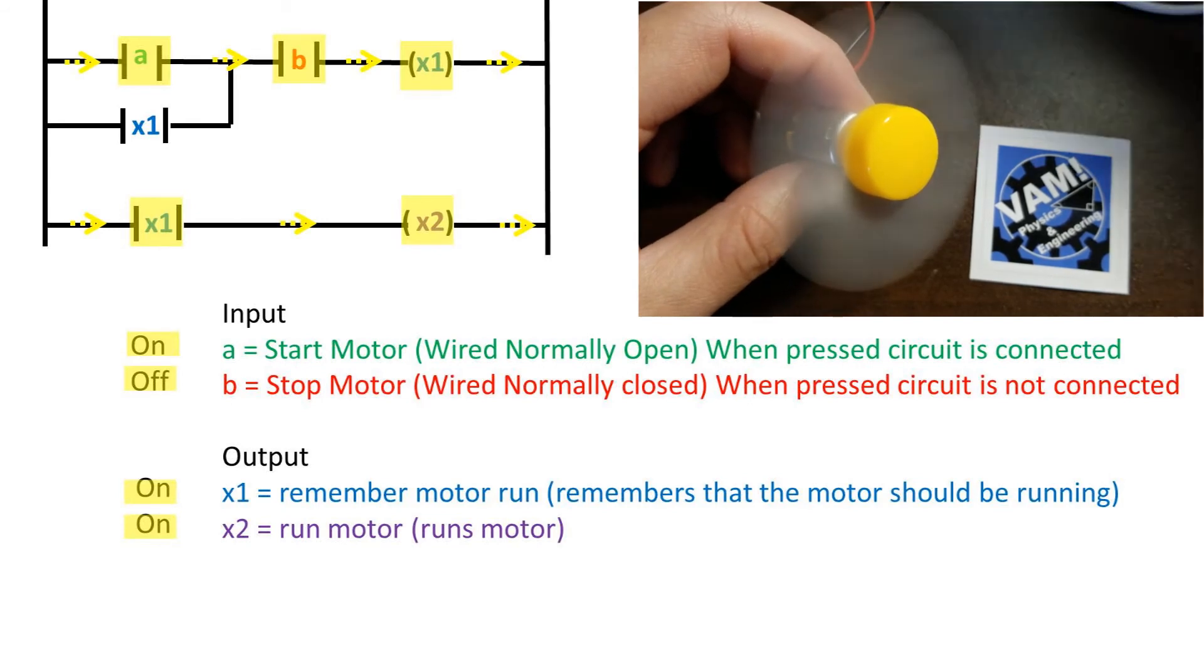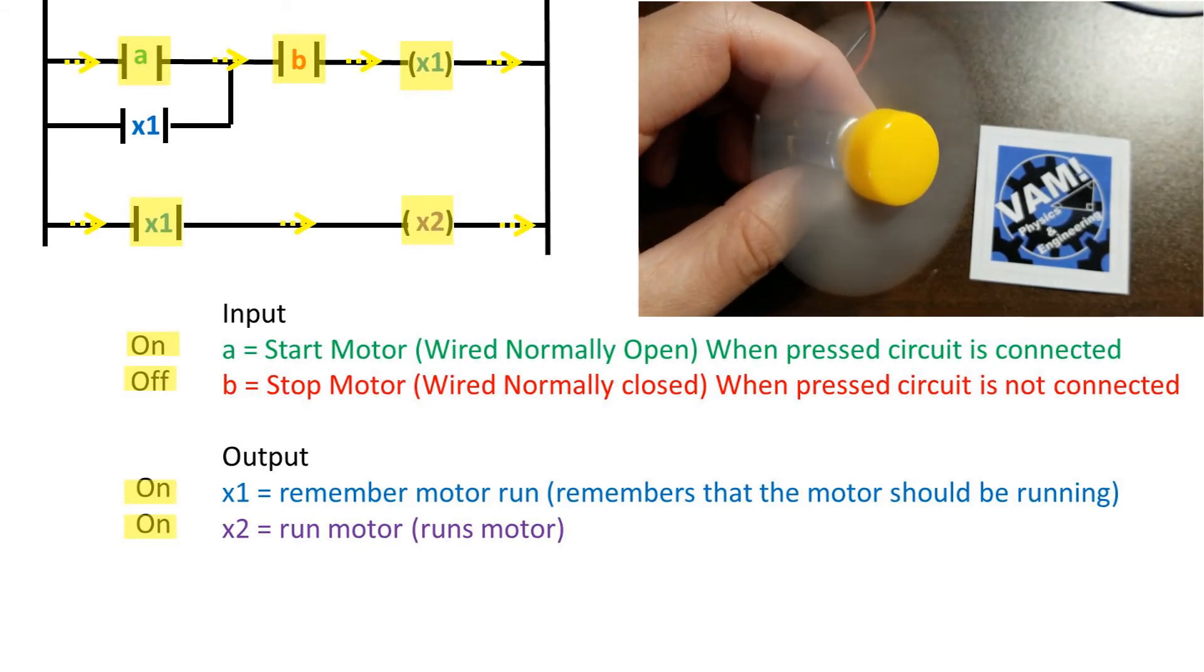Now let's see what happens when we press the start button. Power flows through the A and B contact to the X1 remember coil. On the next rung, the X1 contact is energized, which energizes the X2 motor run coil.